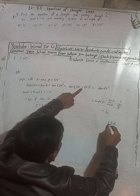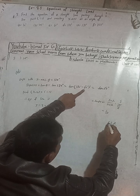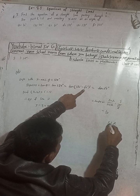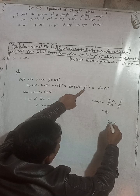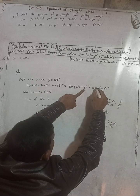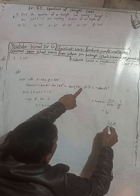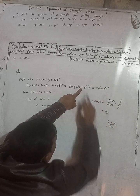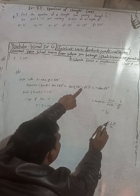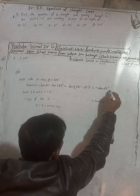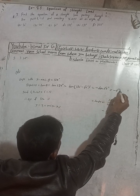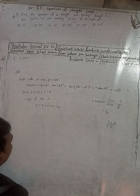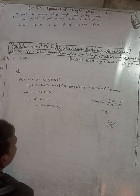In the second quadrant, sine is positive but cosine and tangent are negative. Therefore tan 120 equals minus tan 60 equals minus root 3. So the slope m equals minus root 3.